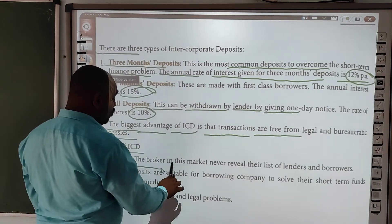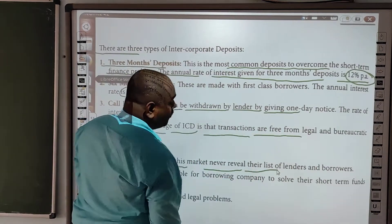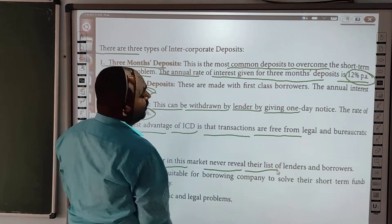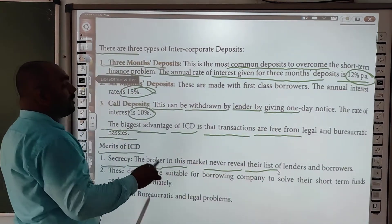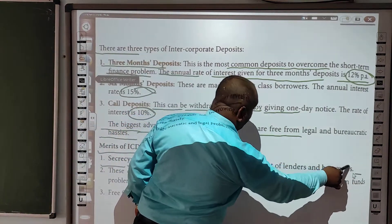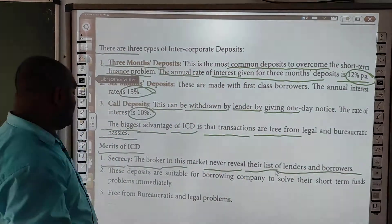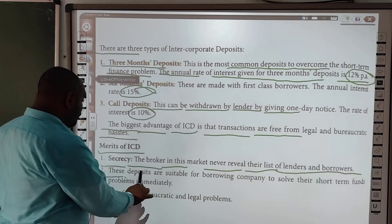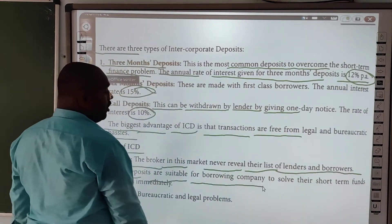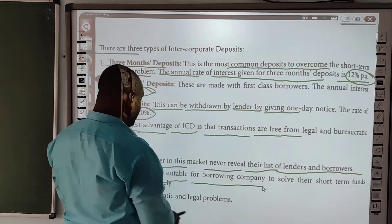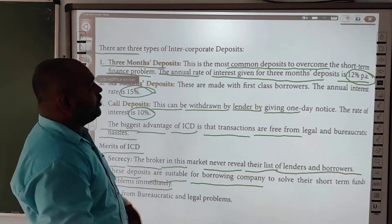Secrecy ki agar baat karein: the bank and the broker in this market never reveal their list of money lenders — yani is tarah ke market mein kabhi bhi broker kya karta hai, apne borrowers ke baare mein ya lenders ke baare mein unki list ko disclose nahi karta. These deposits are suitable for the borrowing companies to solve their short-term finance problems immediately.